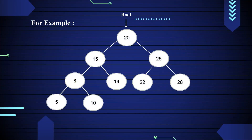Now let's see an example of post-order traversal. Here 20 is root node. We first visit the left subtree of 20, i.e. 15. Node 15 also traverses in post-order. 8 is the left subtree of 15, so it also traverses in post-order. Then 5 is the left subtree of 8, but 5 has no subtree, so print 5. Move towards the right subtree of 8; 10 is the right subtree of 8 and it has no children.